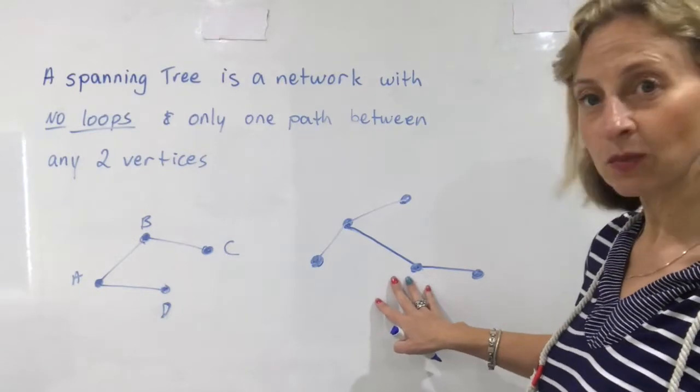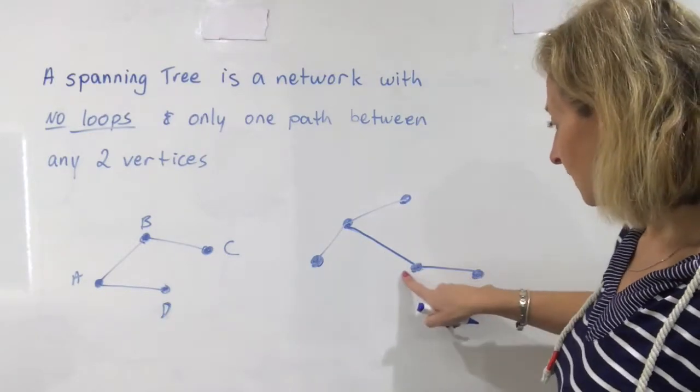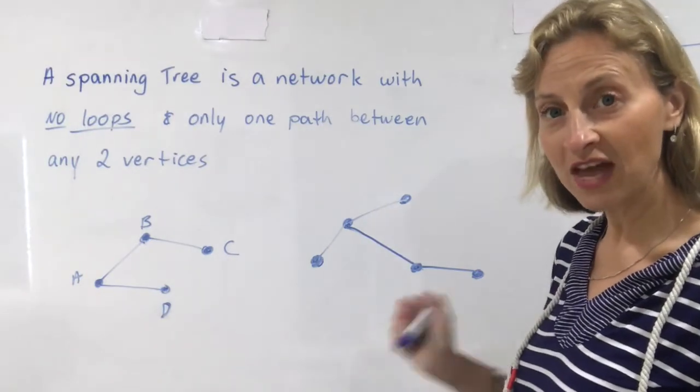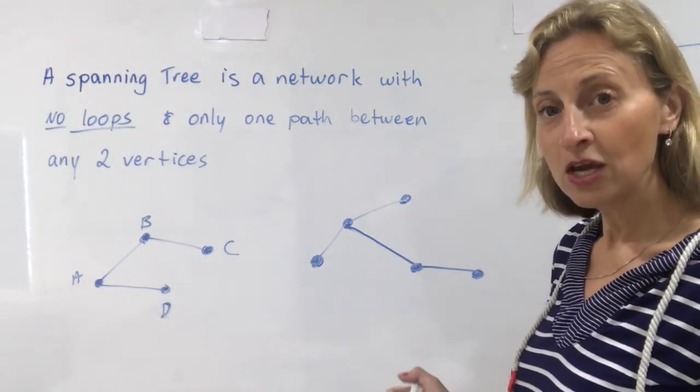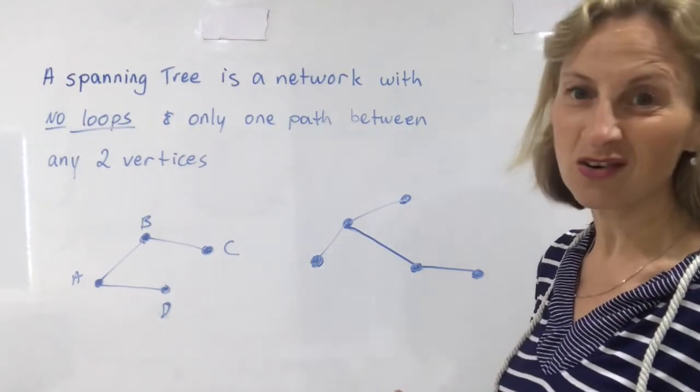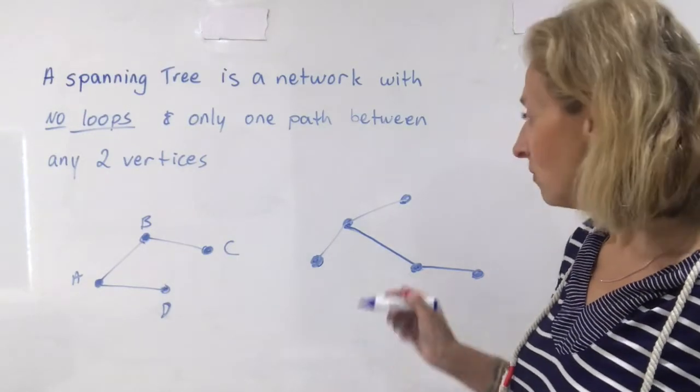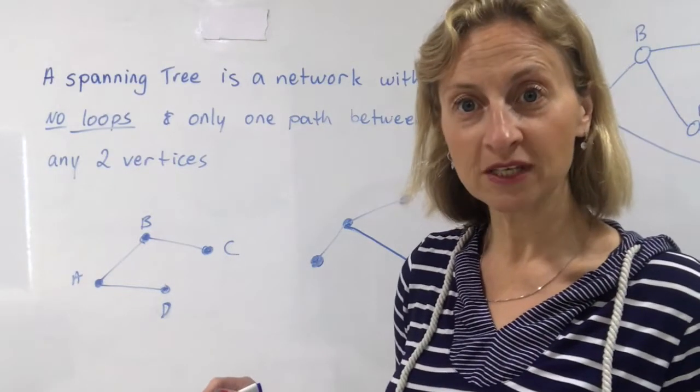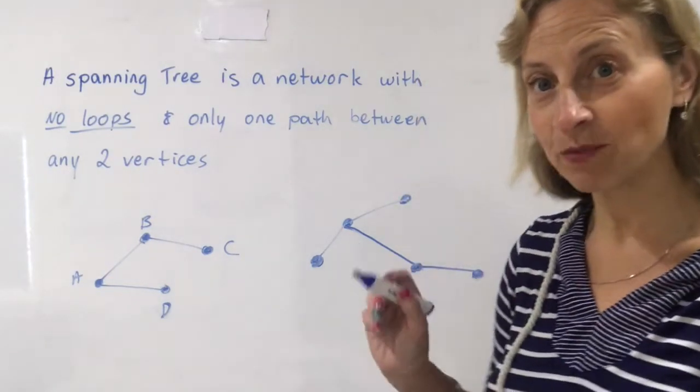And you can have pictures like this as well. Again there's only one route to get to every vertex and that's what makes it a spanning tree. You may or may not have noticed, I don't think anybody would notice it on their own, that when you have a spanning tree there is a relationship between the vertices and the edges. Let's see if we can work it out.